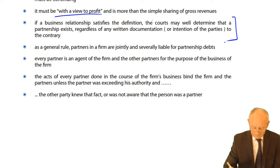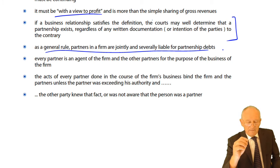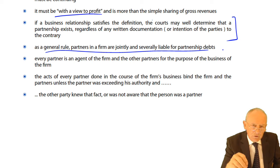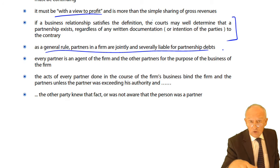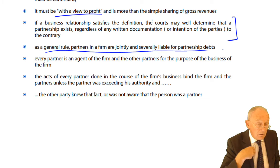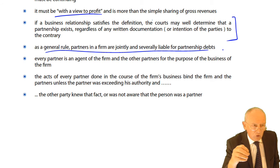As a general rule, partners are jointly and severally liable for partnership debts. A partner is an agent of the firm and their partners for the purpose of the business of the firm. The acts of every partner carried out in the firm's business bind the firm and the partners. So if I carry out an act on behalf of the firm and substantial losses are incurred, it's not just me who has to stand those losses — it's you and all the other partners. We're all jointly and severally liable.